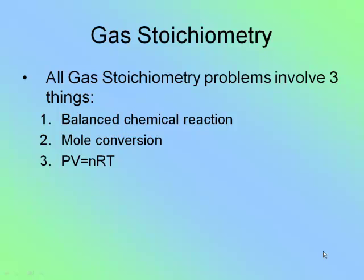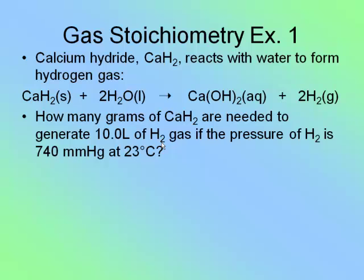In all gas stoichiometry problems, regardless of what we're doing, we're always going to do three things: use a balanced chemical equation, do some sort of mole conversion, and use PV = NRT. PV = NRT is the important part that separates a regular stoichiometry problem, which only uses the first two, from a gas stoichiometry problem, which also uses PV = NRT.